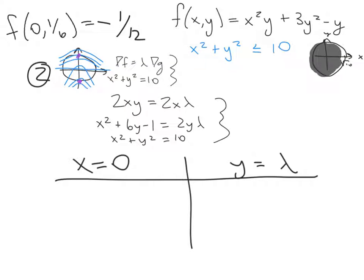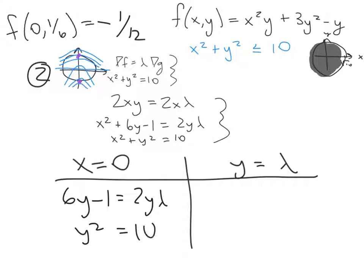Pursuing x = 0 first: substituting into the second equation gives 6y − 1 = 2yλ, and the constraint becomes y² = 10, so y = ±√10. These are the extrema we could already see in the contour plot.